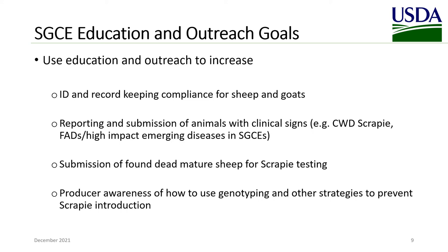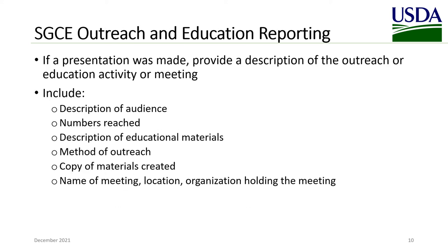Specific activities could include development and distribution of pamphlets, newsletters, or signage for markets, or attendance at producer meetings. For sheep and goat, cervid, and equine outreach and education reporting, include the following if a presentation was made: provide a description of the outreach or education activity or meeting, including the description of the audience, the number of people reached, description of educational materials, the method of outreach, a copy of the materials created, and the name of the meeting, its location, and the organization holding the meeting.